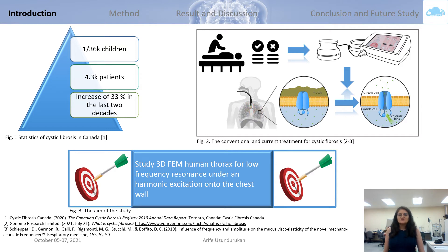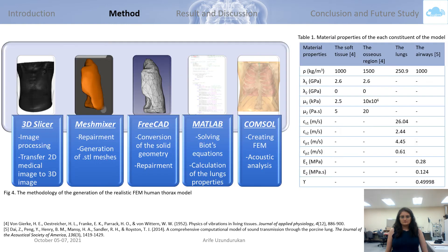In this study, it is aimed to study a three-dimensional finite element human thorax for low-frequency resonance under a harmonic excitation onto the chest wall. The process starts with the generation of a three-dimensional image from computed tomography data, followed by repair of the image, conversion to solid geometry, computing lung physical properties, and the generation of finite element models for the acoustic studies.